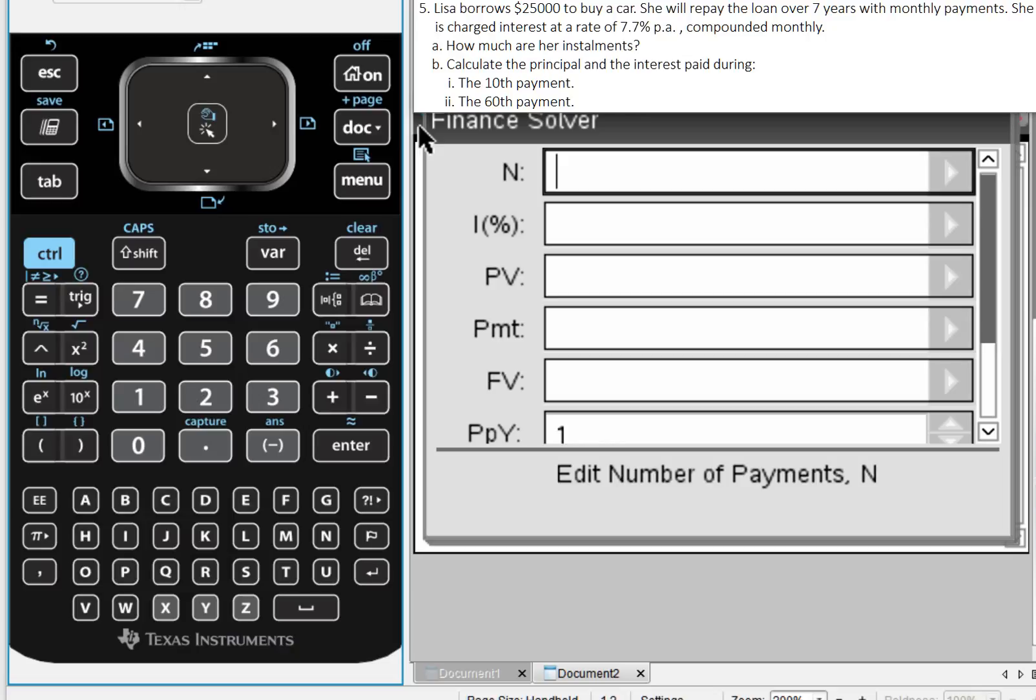Part A asks, how much are her installments? So that means, how much is she paying every month? Let's use the finance solver to help us with this.